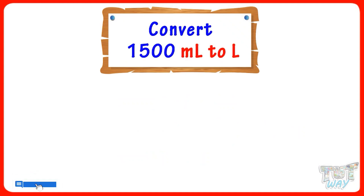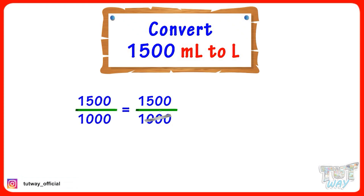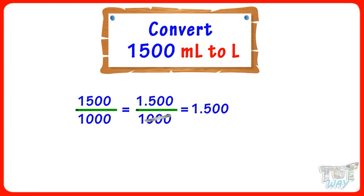1500 milliliters equals how many liters? 1500 milliliters equals 1500 divided by 1000 liters. Cutting 3 zeros and putting the decimal after 3 digits from the right, we get 1.5. So 1500 milliliters equals 1.5 liters.